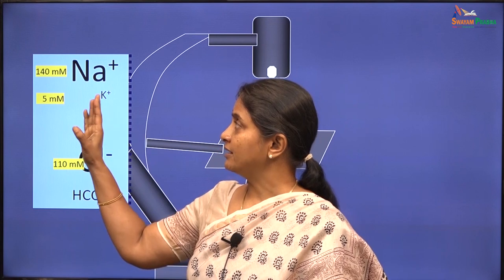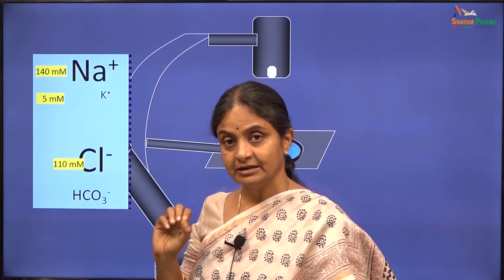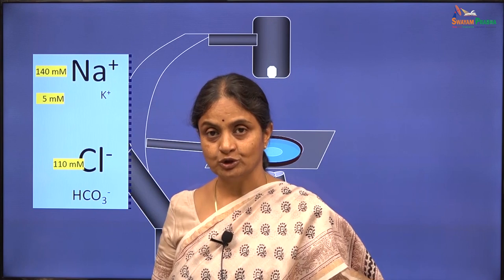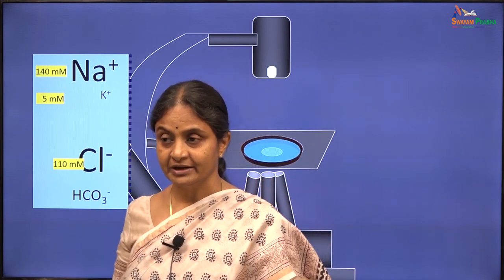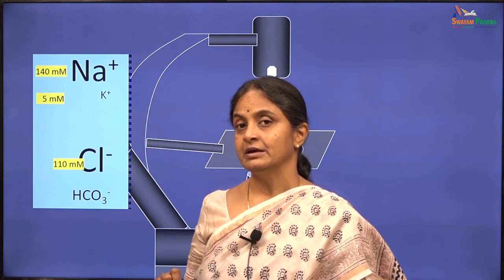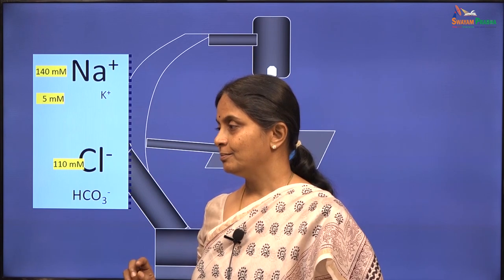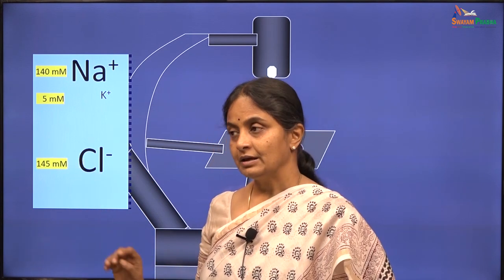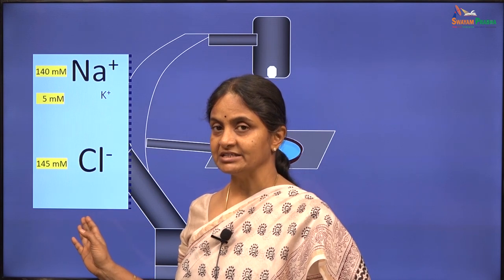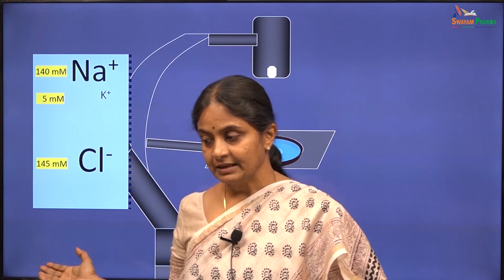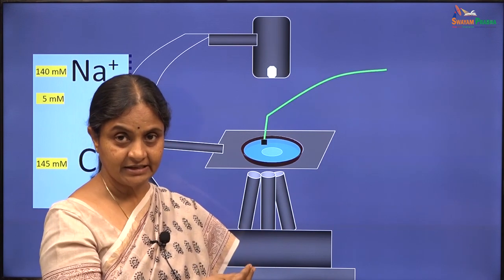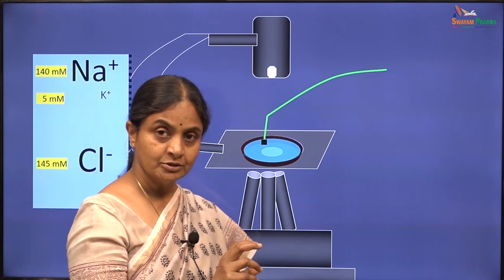The extracellular solution is prepared in the laboratory to resemble tissue fluid. Sodium concentration is about 140 millimolar, potassium about 5 millimolar — extracellular potassium is very important and maintained within a narrow range of 3 to 5 millimoles per litre. Chloride in plasma is about 110 millimoles per litre and bicarbonate about 22 to 25 millimoles per litre. For technical reasons, bicarbonate is replaced with chloride and another buffer is used to maintain pH at 7.4. A bath electrode connects this solution to the voltage-measuring device.